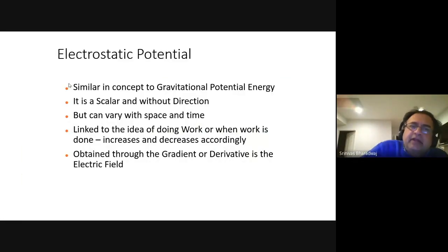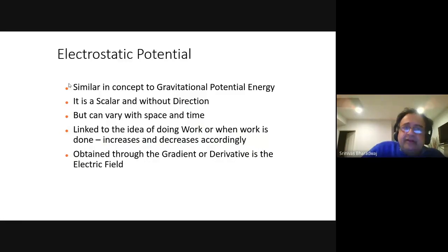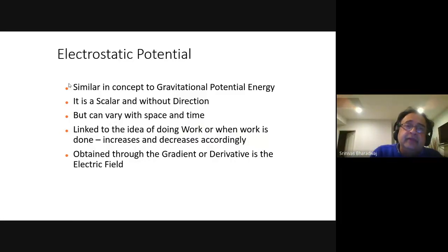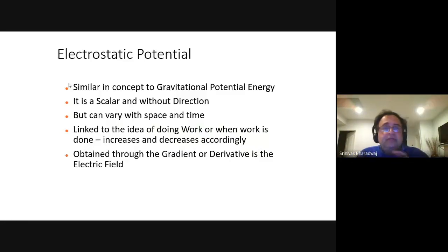Electrostatic potential is similar to gravitational potential. If you take the gradient of the potential, it gives you a vector. dV/dR will give you the electrostatic field. E·dL, on the other hand, will give you the electrostatic potential. That is how the electric field and electrostatic potential — which is also in some ways a field — are related to each other.